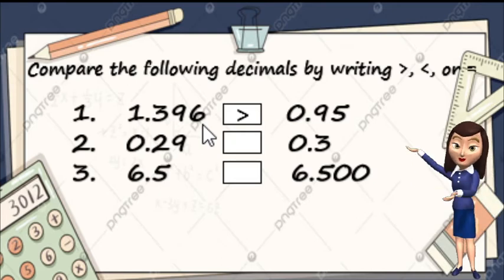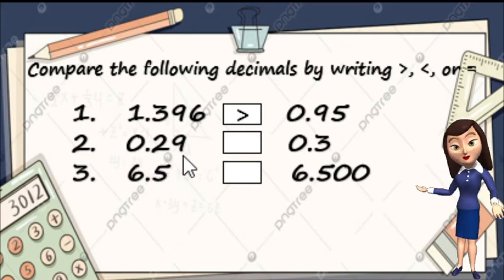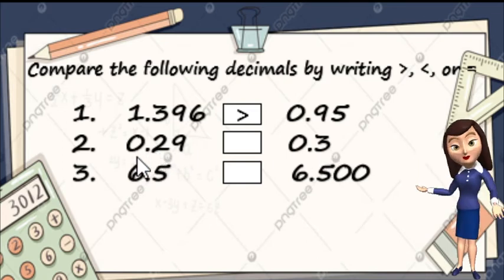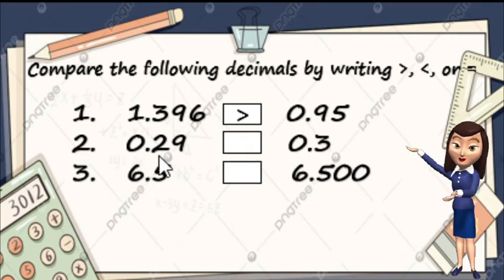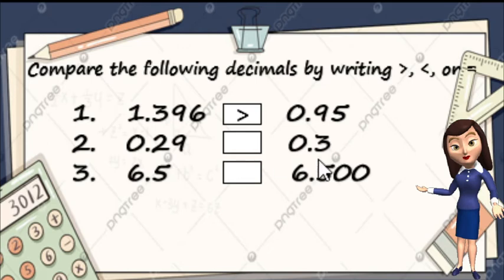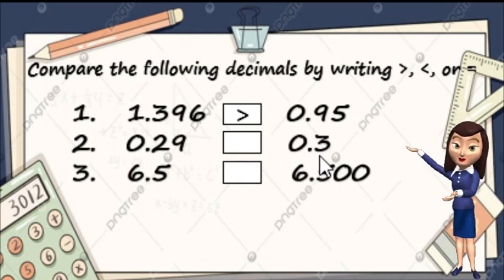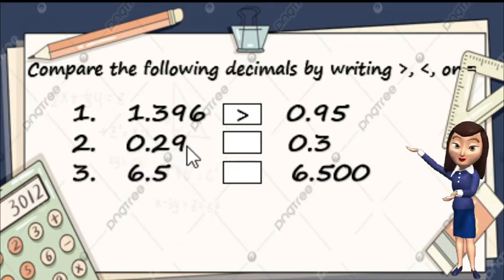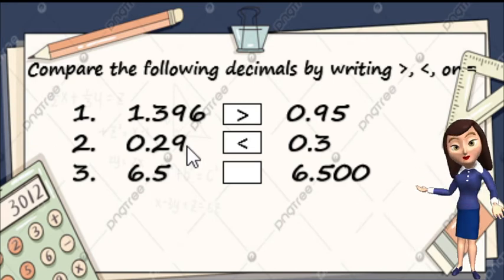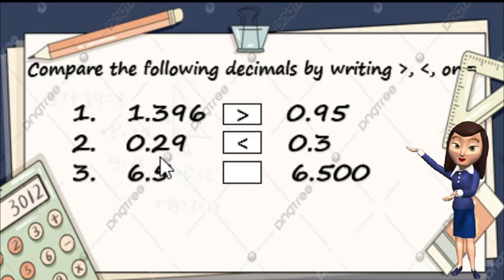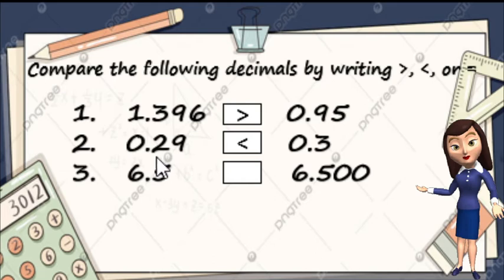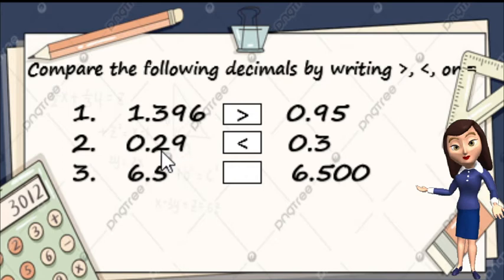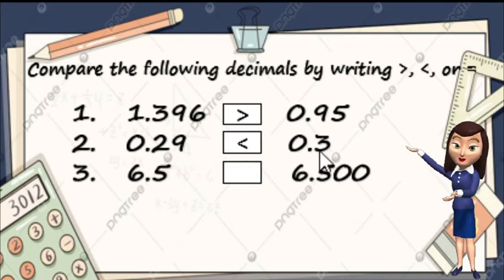Next, number 2: we have 29 hundredths compared to 3 tenths. So 0 yung whole number part natin — wala tayong whole number. So ang titignan natin is yung tenths place. Tenths place nito is 2, ito naman ay 3. So ano mas malaki? Mas malaki yung 3. So ibig sabihin, 29 hundredths is less than 3 tenths. Ang pinagbasihan natin is yung tenths place. Kahit ito ay may 9 dito, ang titignan natin is yung tenths place — 2 versus 3. Mas malaki yung 3, so 29 hundredths is less than 3 tenths.